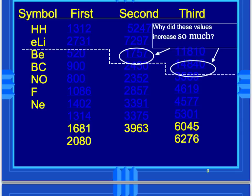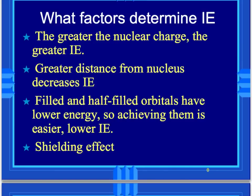We can look at some big jumps in the table, and this covers lithium and beryllium. What factors determine ionization energy? First, the greater the nuclear charge — meaning the number of protons — the greater the ionization energy. The greater the distance from the nucleus, the lower the ionization energy. Filled and half-filled orbitals have lower energy, so achieving them lowers ionization energy. And then there's the shielding effect.